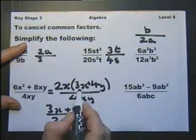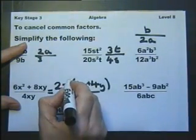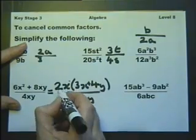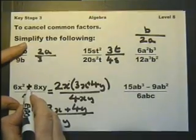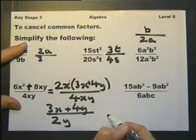The idea is when you cancel, you only cancel if there is a multiplication sign. And there is a multiplication sign in between the 2x and the brackets. If you start canceling with addition signs, or subtraction signs, you will go wrong.